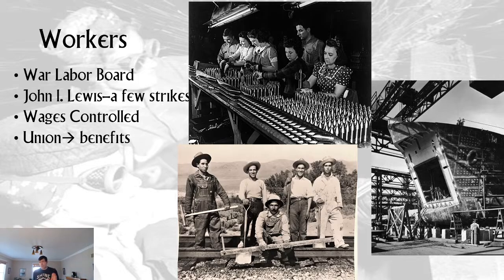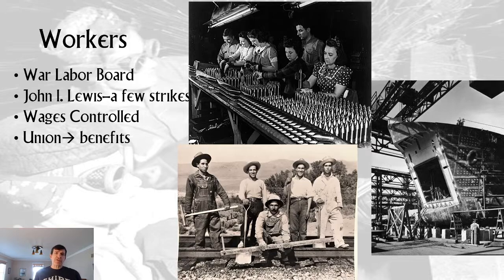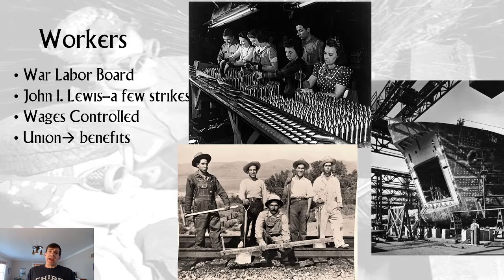As unemployment dropped and companies were hiring workers like mad, the way companies deal with low unemployment is by raising wages. But they couldn't raise wages because the government controlled that. So through labor unions, they added benefits. Most of the benefits workers of my generation expected — those came from unions, and this started in World War II. Workers of a modern generation are not getting the same benefits, and we're noticing that right now with over 25 million people filing for unemployment insurance.